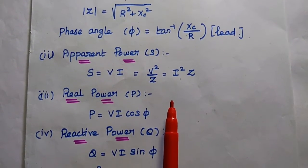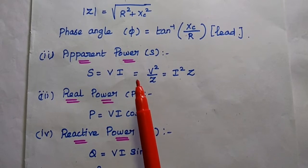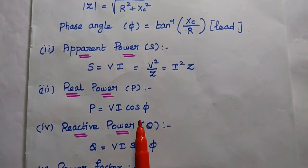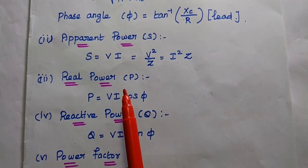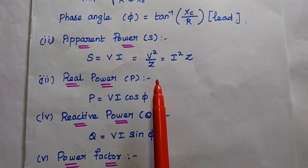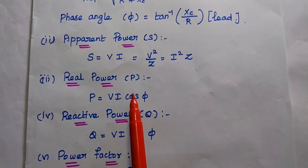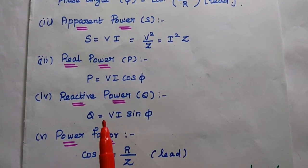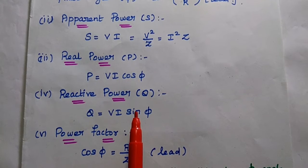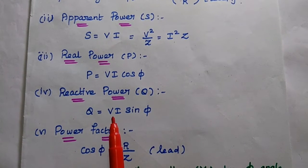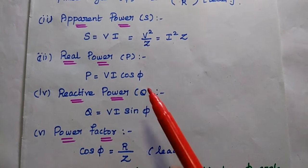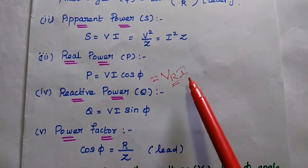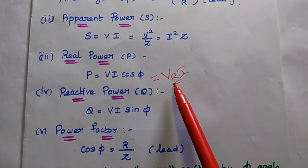The apparent power S = V × I, which can also be represented as V²/Z or I² × Z. The real power is the power dissipated due to the resistive element, given by P = V × I × cos(phi). This can also be represented as Vr × I, where Vr is the voltage drop across the resistor. The reactive power due to the reactive element Xc is Q = V × I × sin(phi).